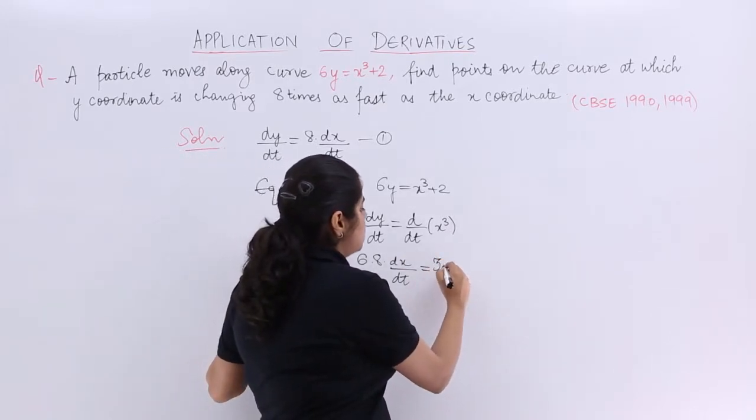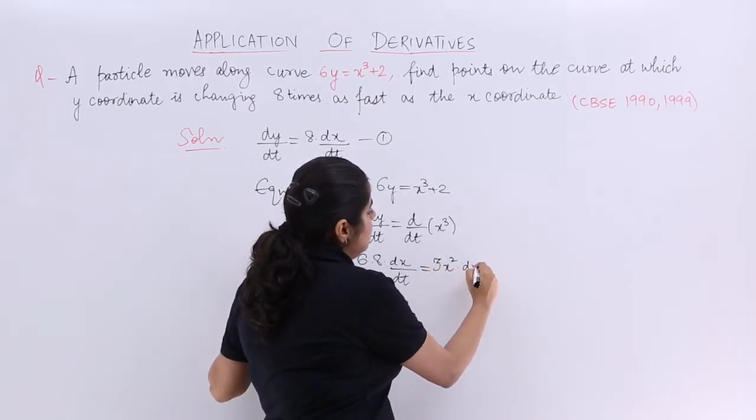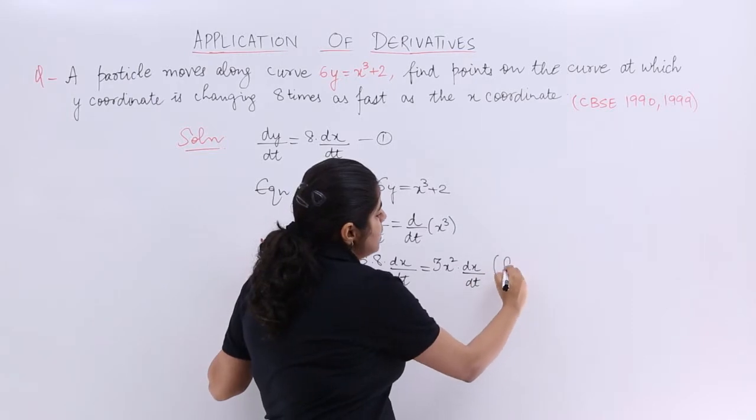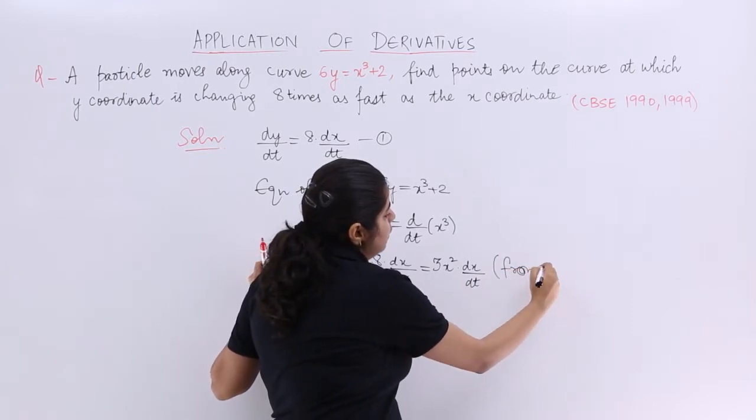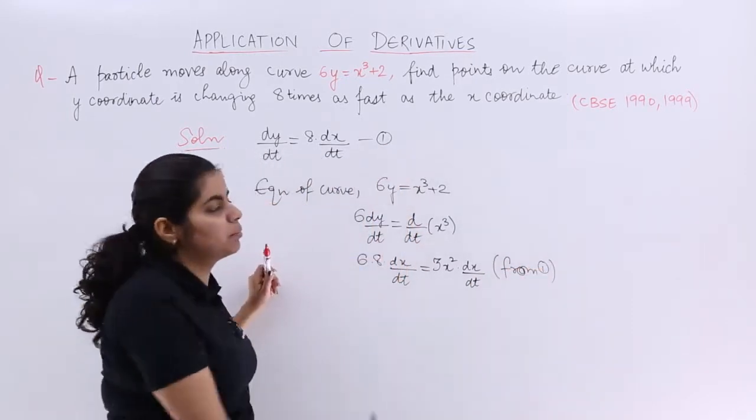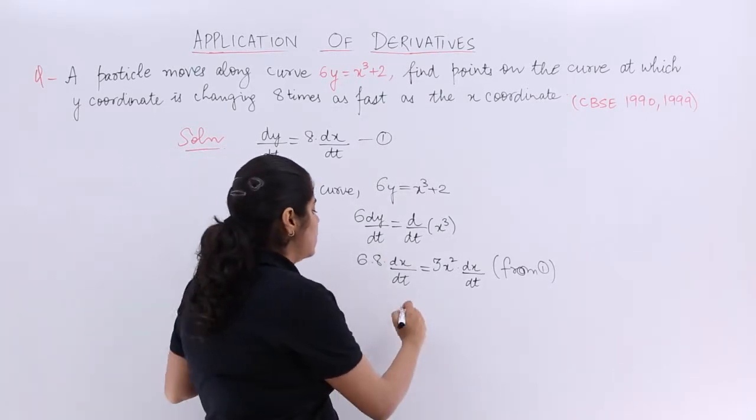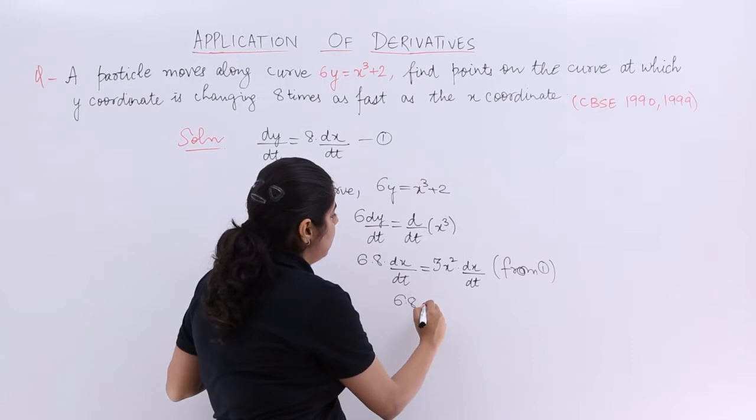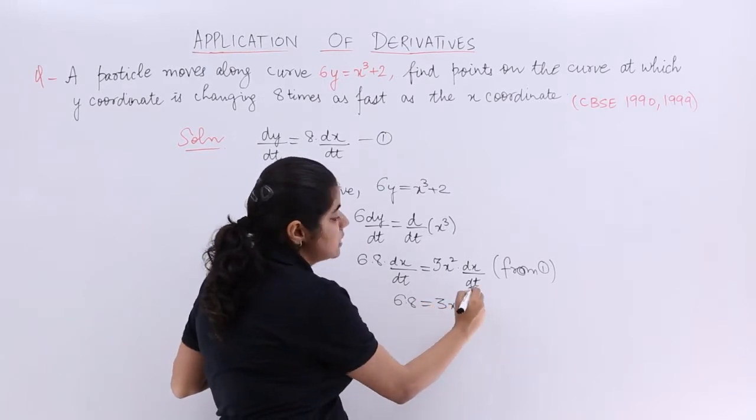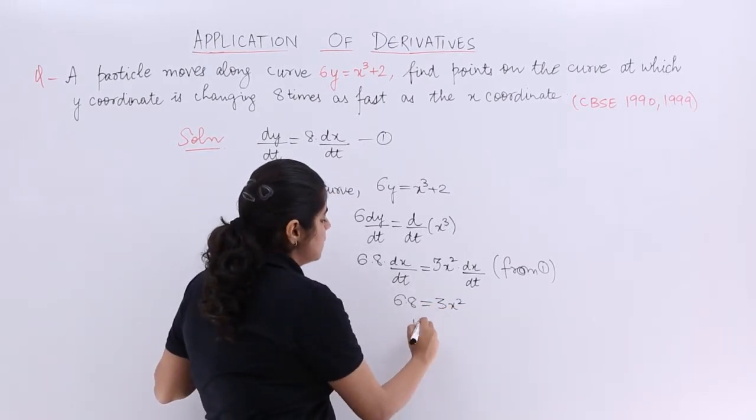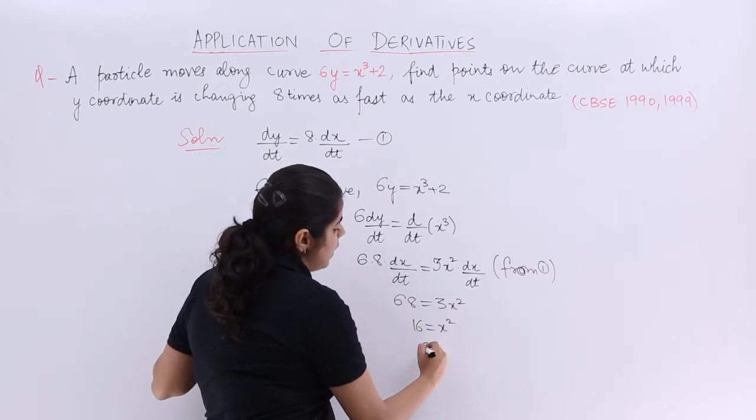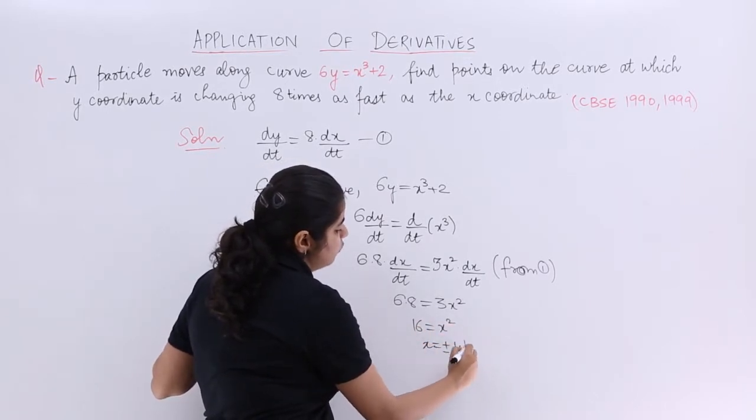So it is 3x squared dx/dt, and this knowledge we used was from equation number 1. Now certain things cancel. dx/dt goes with dx/dt. So it is nothing but 6 multiplied by 8 equals 3x squared. 3 goes to the other side. So basically it is 16 equals x squared, or x equals plus minus 4.